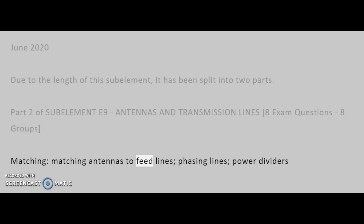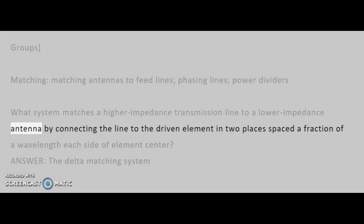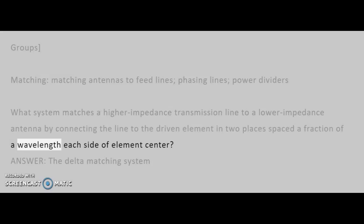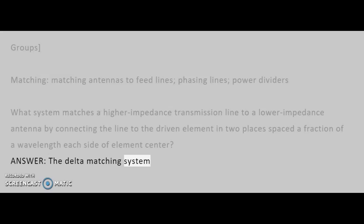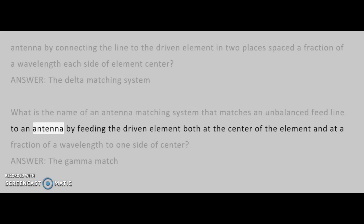Matching: Matching Antennas to Feed Lines, Phasing Lines, Power Dividers. What system matches a higher impedance transmission line to a lower impedance antenna by connecting the line to the driven element in two places spaced a fraction of a wavelength each side of element center? Answer: The Delta Matching System.